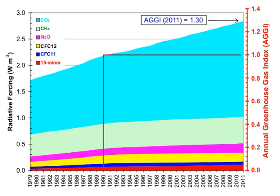A greenhouse gas is a gas that absorbs and emits radiant energy within the thermal infrared range. Greenhouse gases cause the greenhouse effect. The primary greenhouse gases in Earth's atmosphere are water vapor, carbon dioxide, methane, nitrous oxide, and ozone.